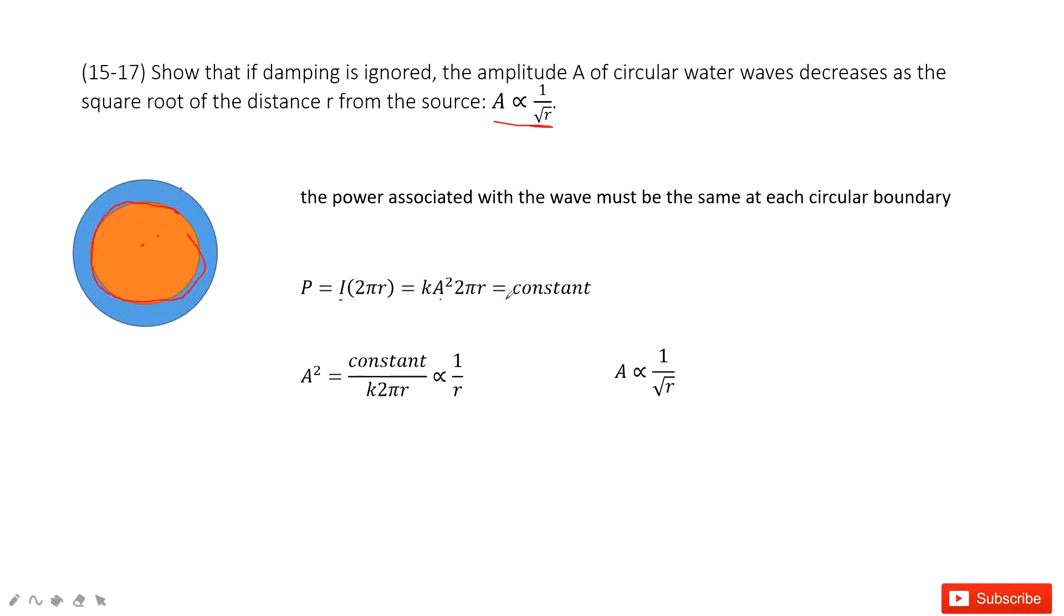Now the question: the power is constant. So now how can we find A? So A squared is a constant divided by k times 2πr.